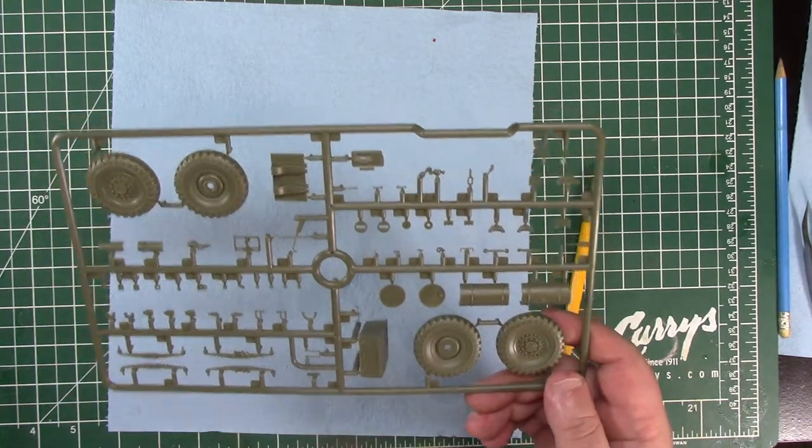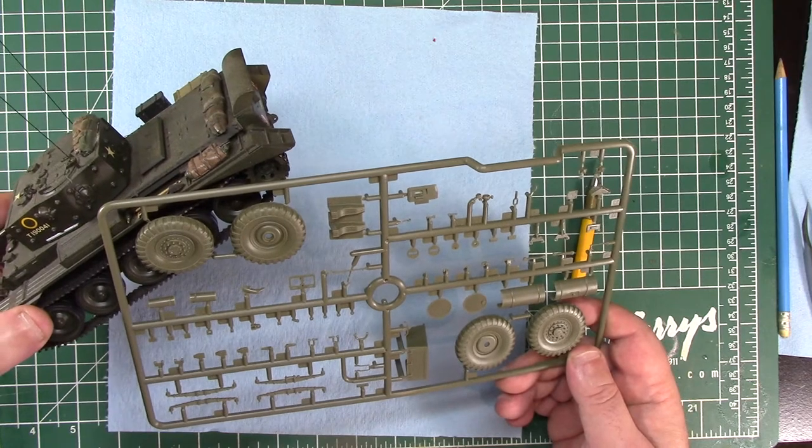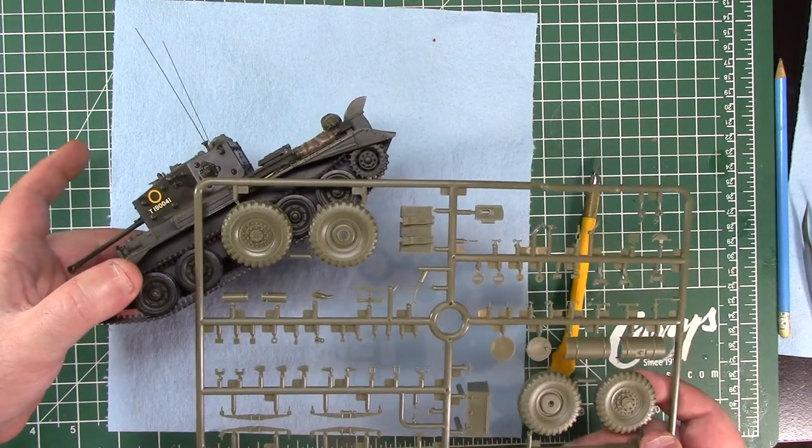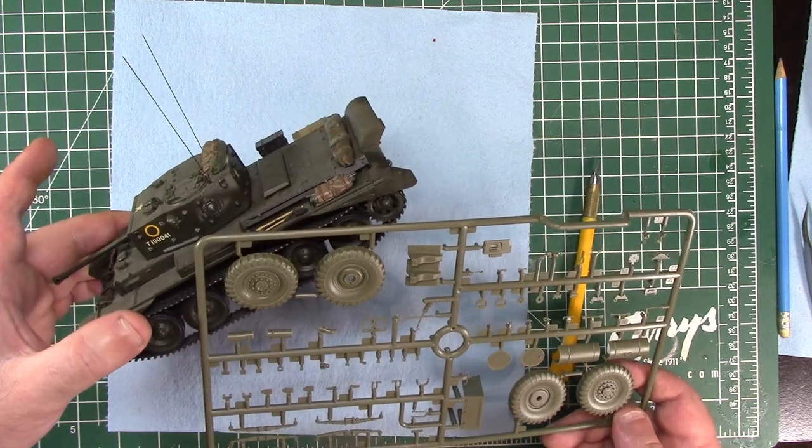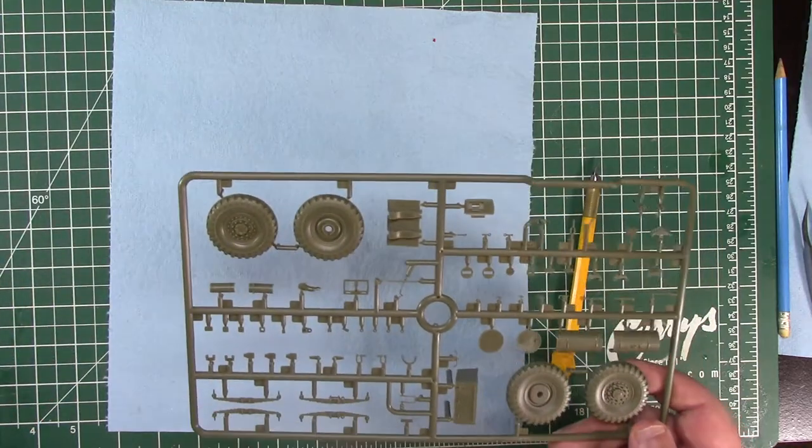And there's those wheels, again just to give you an idea of perspective, the wheels are almost as tall as the hull of a Cromwell, so this vehicle is going to be tall.